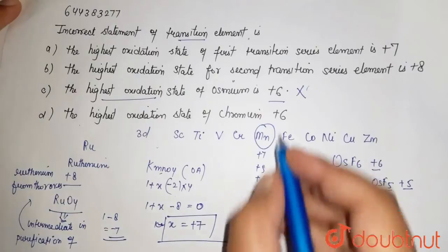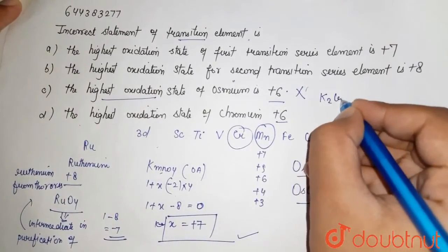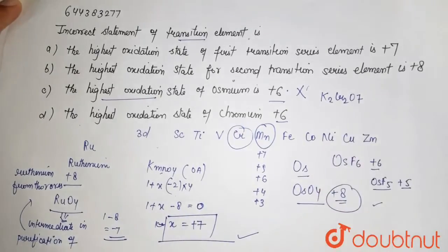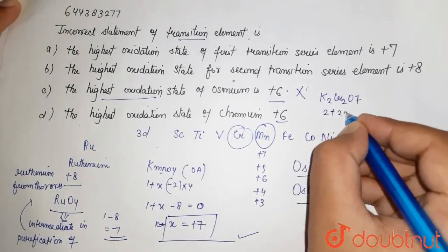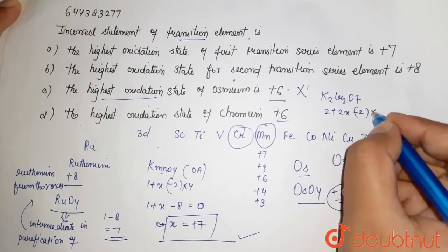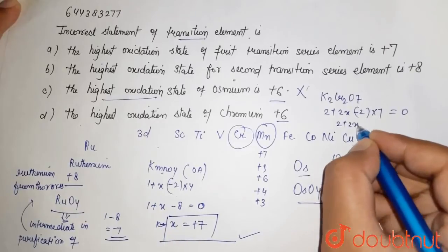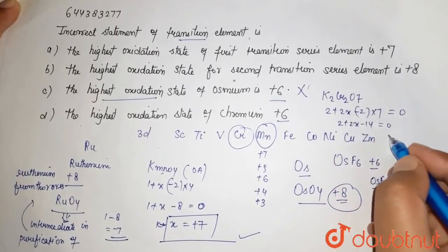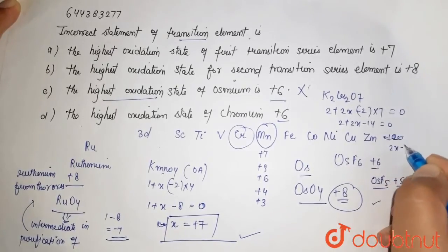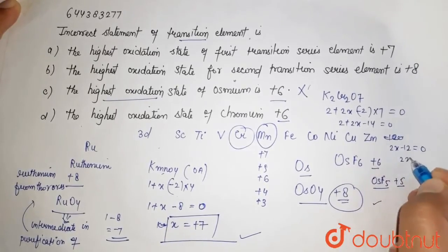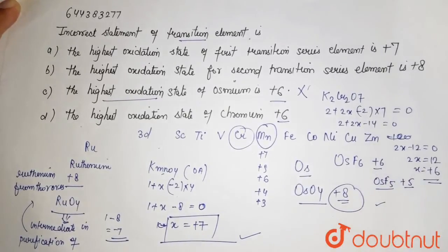The highest oxidation state of chromium - yes, it is +6. You have seen K2Cr2O7, potassium dichromate. If you find the oxidation state of chromium: 2 + 2x + (-2) × 7 = 0. So 2 + 2x - 14 = 0, which gives 2x = 12, so x = +6. This is the maximum oxidation state.